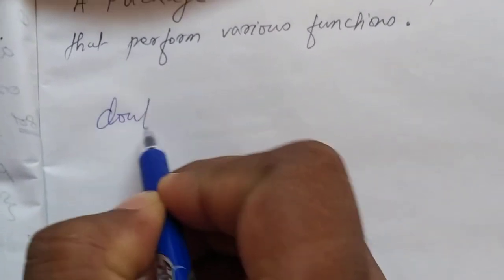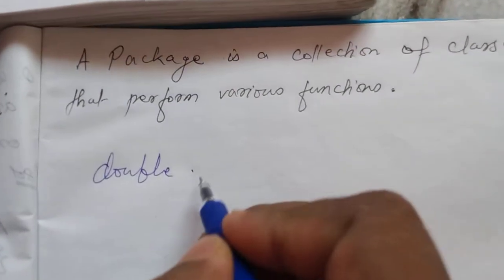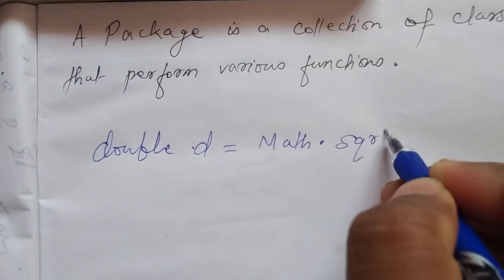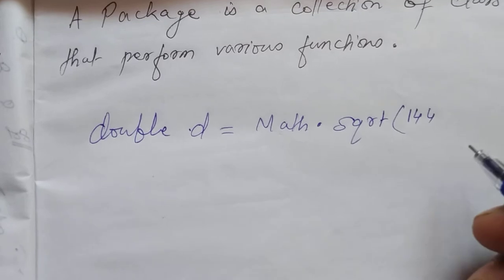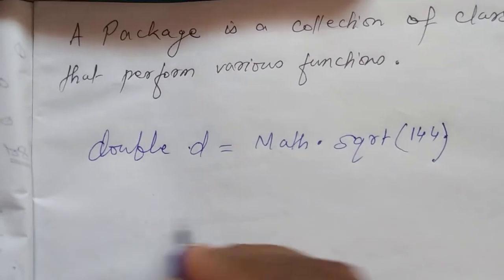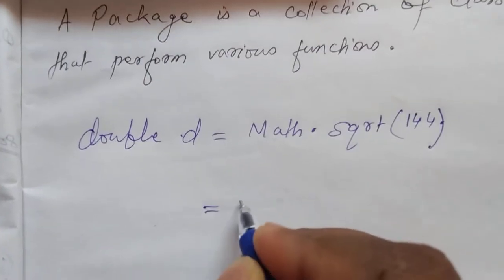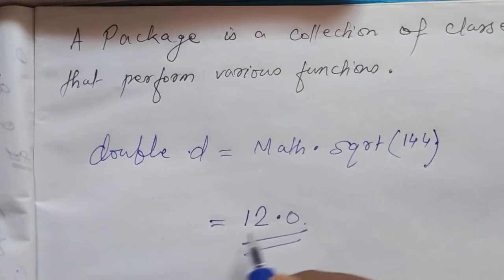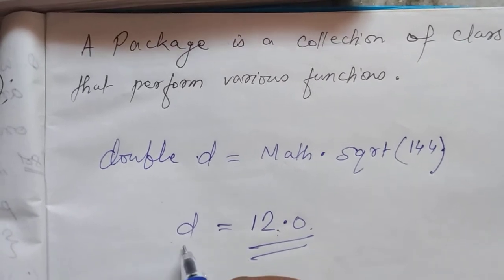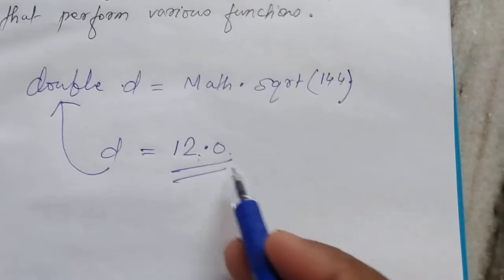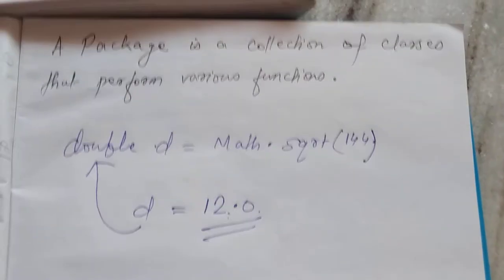Suppose double D = Math.sqrt(144). Its answer will be 12.0. Why 12.0 with point 0? Because the value is stored in D, and D's data type is double — that's why it will add point 0. Understood? Now let's see the next example: double n = Math.sqrt(6.25).